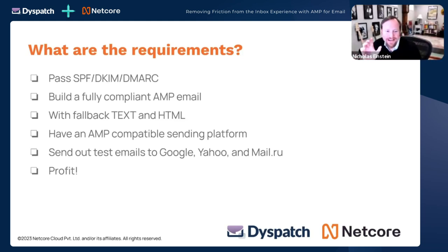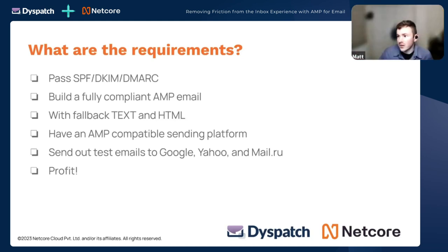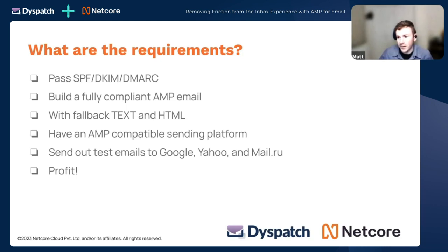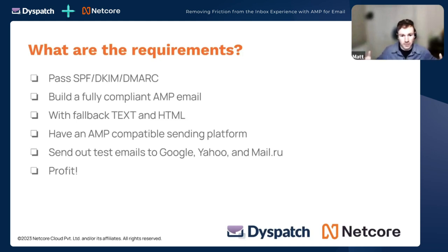Are there any drawbacks to sending an AMP payload using a non-listed ESP? You really can't pull it off. Unless a platform supports sending it, they just can't. A good example: if your ESP could only send plain text emails, you can't put HTML in — it's like a round peg through a square hole. It doesn't work. You have to be working with one of the platforms that supports it.